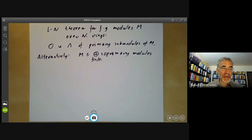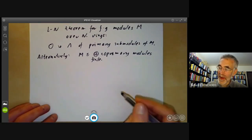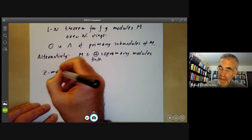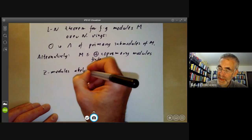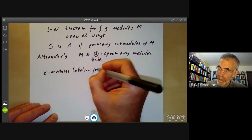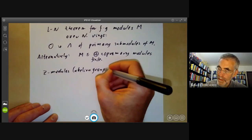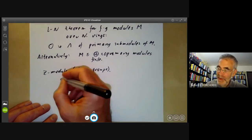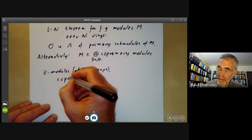For example, this is pretty similar to a well-known theorem about abelian groups. So if we look at Z-modules, abelian groups, then some examples of co-primary modules are the module Z^n, where here the prime ideal is just zero.